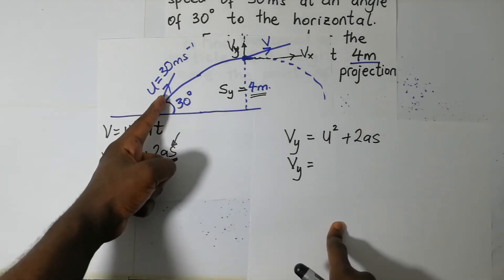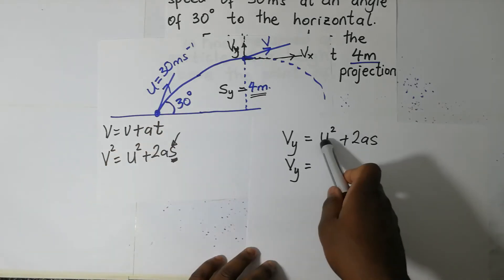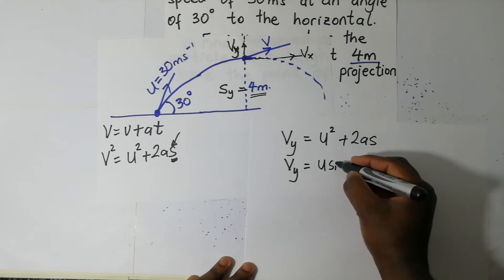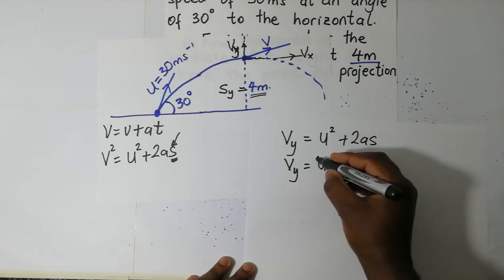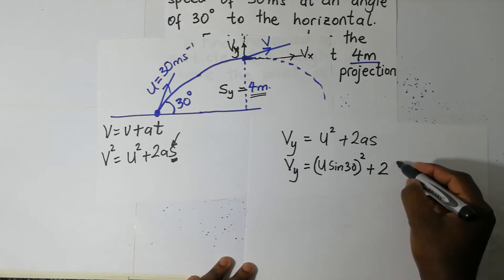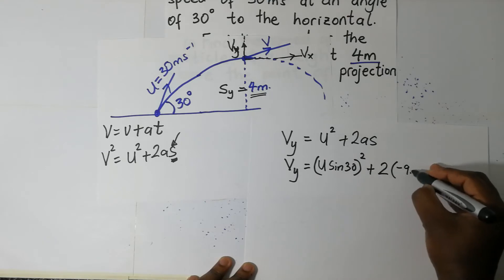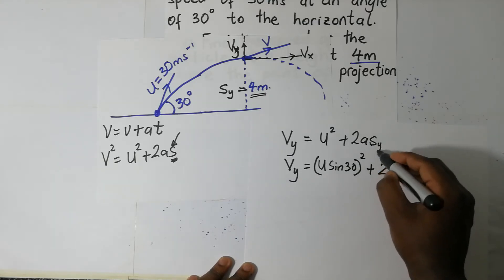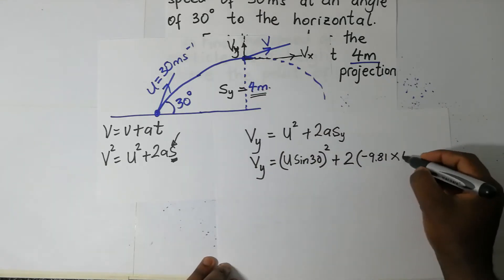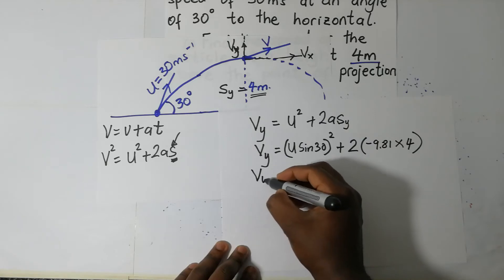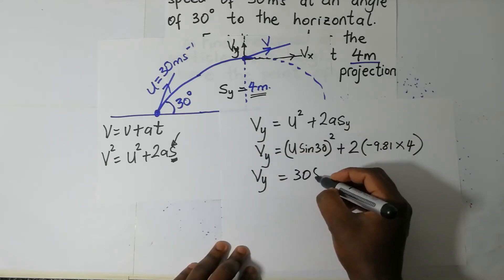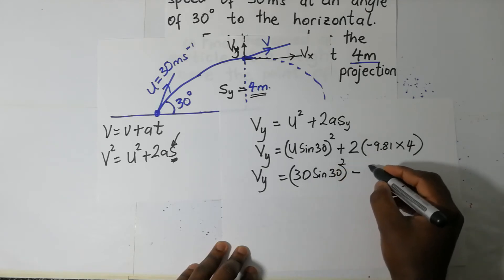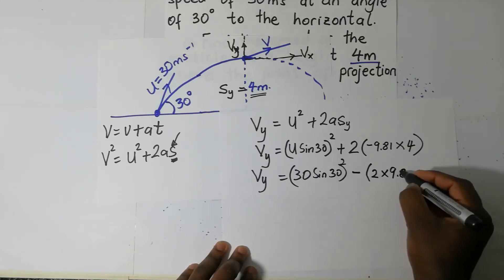Since the particle is projected at 30 degrees at an angle, we need to resolve the initial velocity in the y direction. So the initial velocity in the y direction is U sine 30. We get Vy squared equals 30 sine 30, all squared, plus two times negative 9.81 — because acceleration due to gravity is negative — times the displacement of four meters.